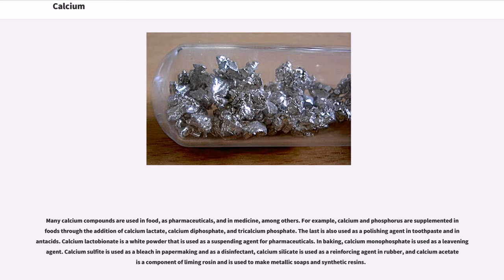Many calcium compounds are used in food, as pharmaceuticals, and in medicine, among others. For example, calcium and phosphorus are supplemented in foods through the addition of calcium lactate, calcium diphosphate, and tricalcium phosphate. The last is also used as a polishing agent in toothpaste and in antacids. Calcium lactobionate is a white powder that is used as a suspending agent for pharmaceuticals. In baking, calcium monophosphate is used as a leavening agent. Calcium sulfite is used as a bleach in papermaking and as a disinfectant. Calcium silicate is used as a reinforcing agent in rubber, and calcium acetate is a component of liming rosin and is used to make metallic soaps and synthetic resins.